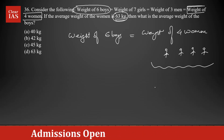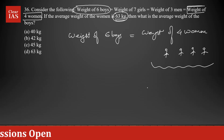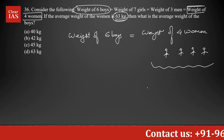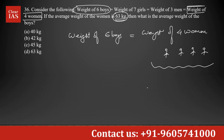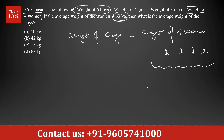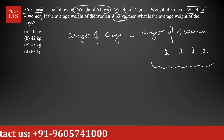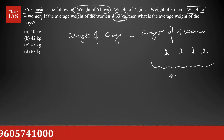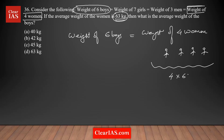To find the total sum of the weights of four women, we use the concept that average weight multiplied by the number of people gives the total sum of their weights. There are four women with an average weight of 63 kg, so the total is 4 times 63, which equals 252 kilograms.